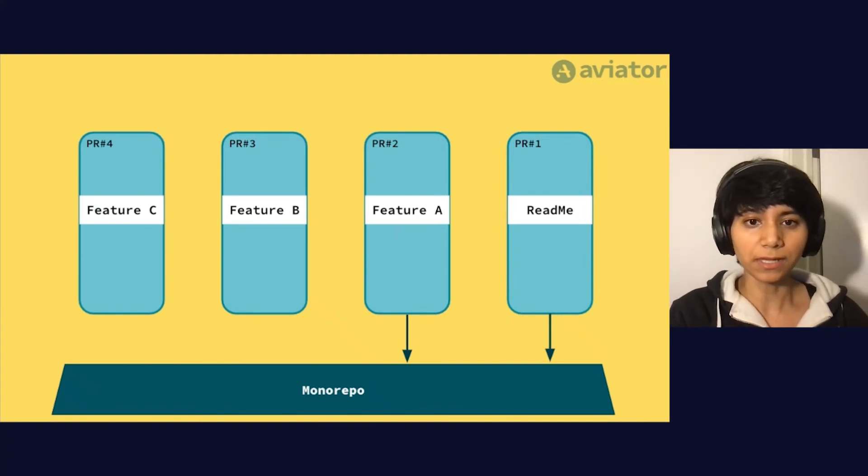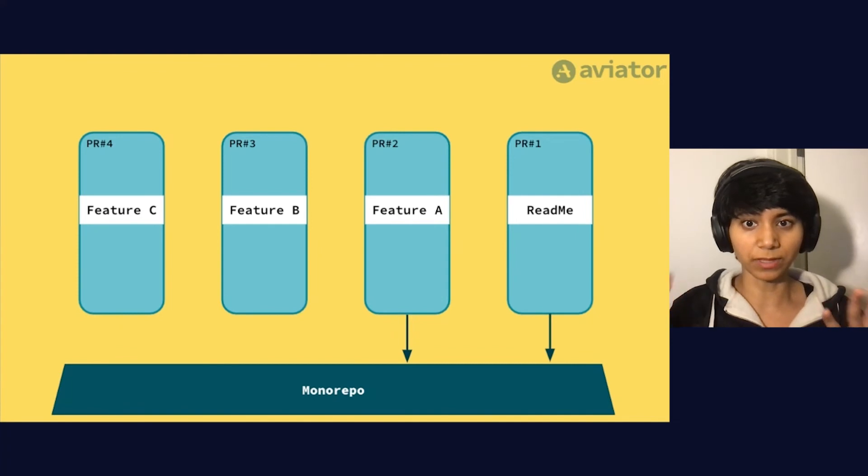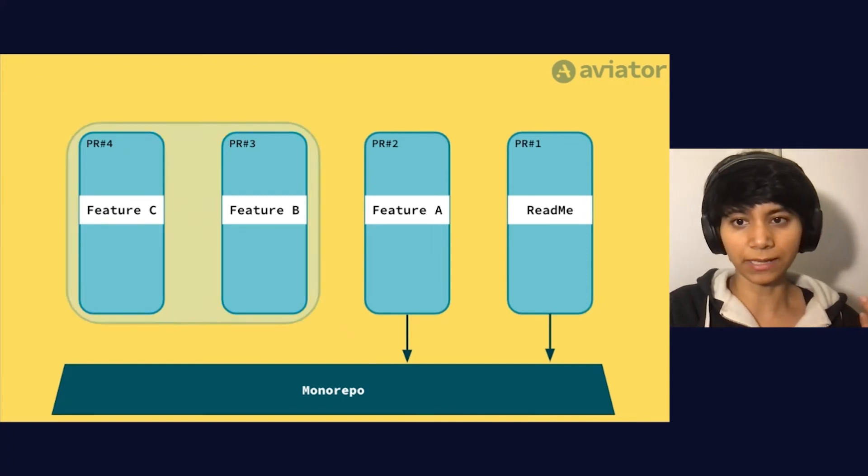In other words, you maintain multiple queues when you know that the PRs within those multiple queues are completely independent of each other. And when PRs are dependent on each other, you fall back to the regular queuing mechanism and you test them together.